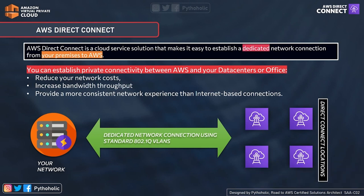So, AWS Direct Connect is a cloud service solution that makes it easy to establish a dedicated network connection from your on-premise to AWS. Along with providing private connectivity between AWS and your data centers, it also helps you reduce your network cost — imagine setting up optical fiber connectivity on your own or creating multiple data centers, that would be really expensive. It also helps increase bandwidth throughput.